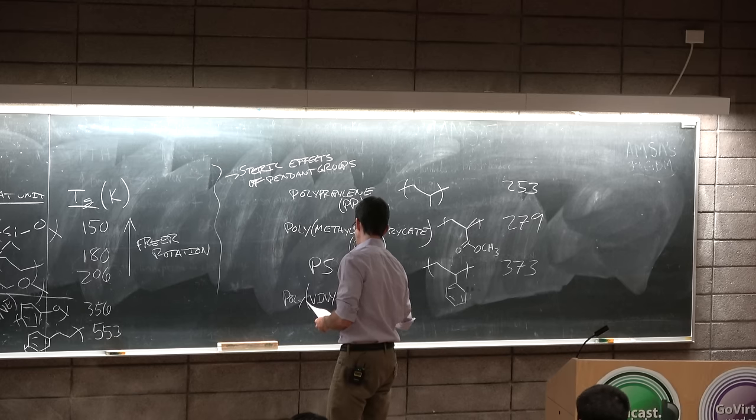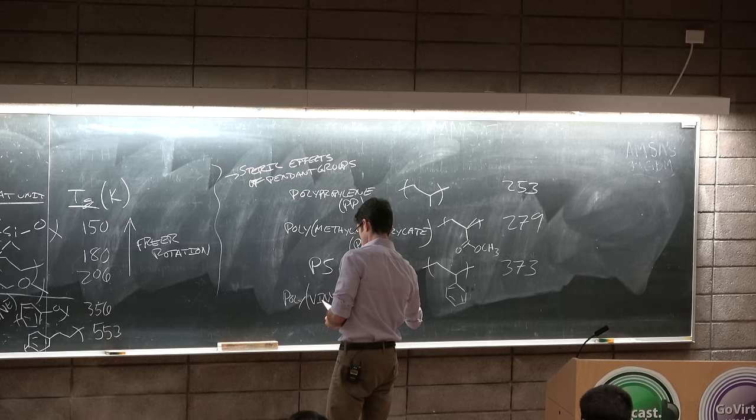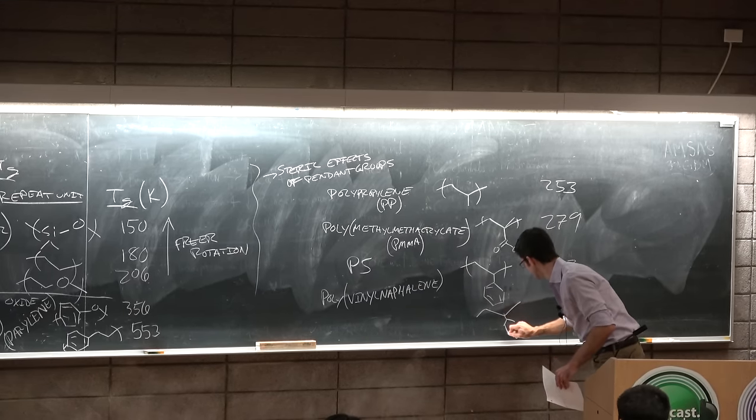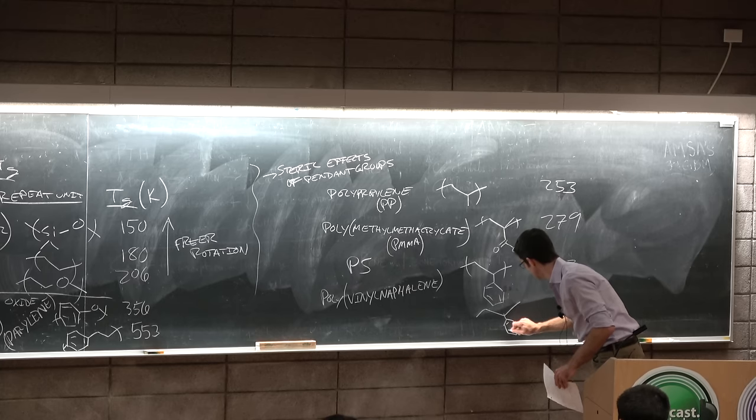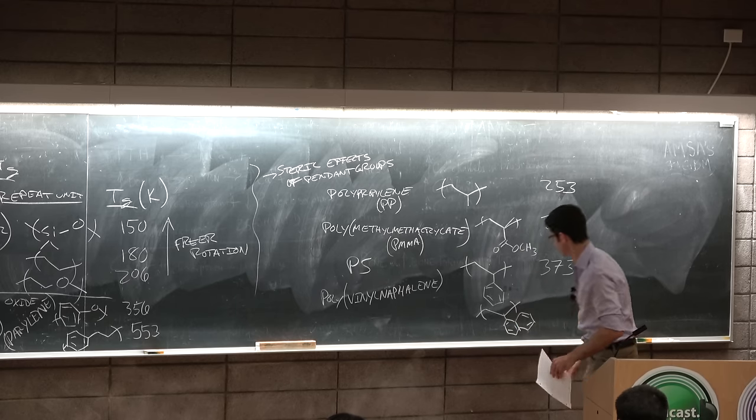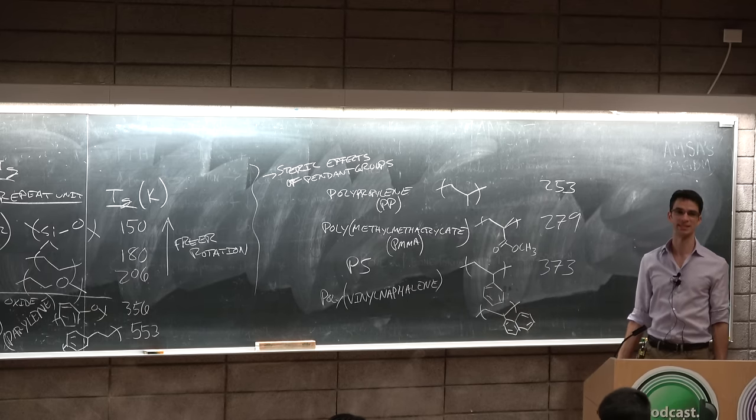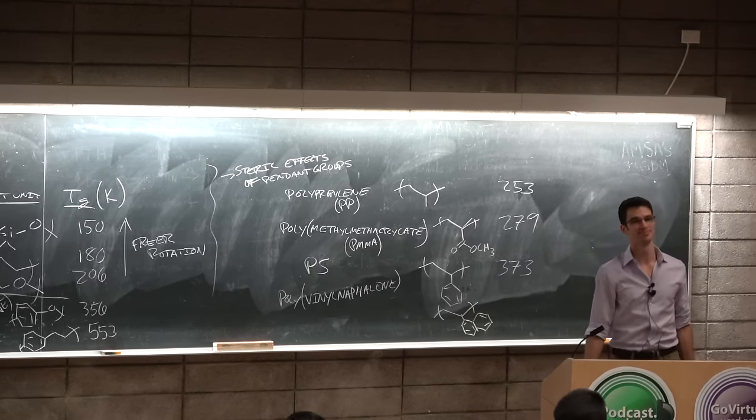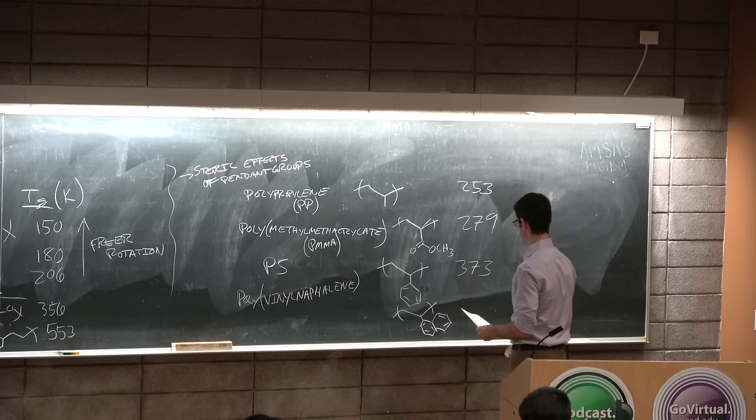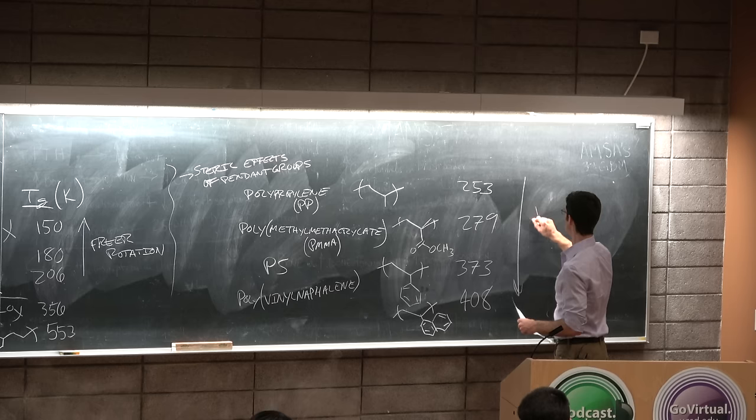Polystyrene, this is something that we talked about pretty early on in the class, which is just polypropylene but this CH3 group is instead a benzene ring, and it has a TG of 373, or about 100C. And if you increase the size of this bulky thing even more, so polyvinyl naphthalene, which I don't know what this is used for but it's fused benzene rings.